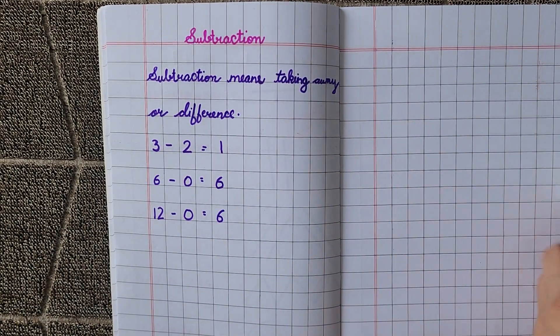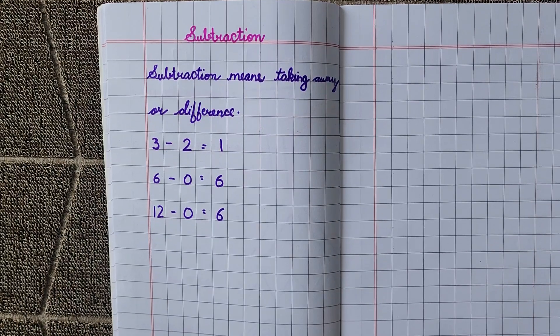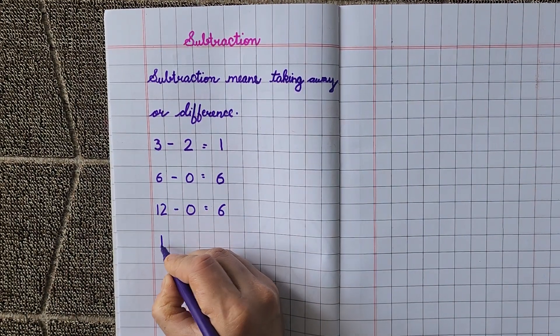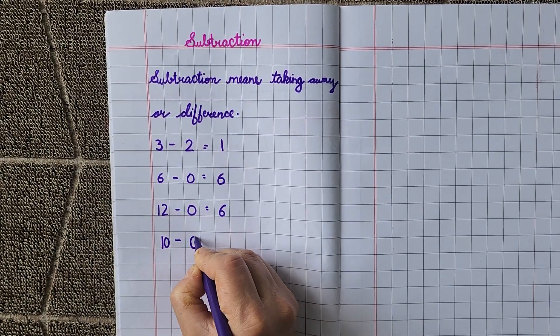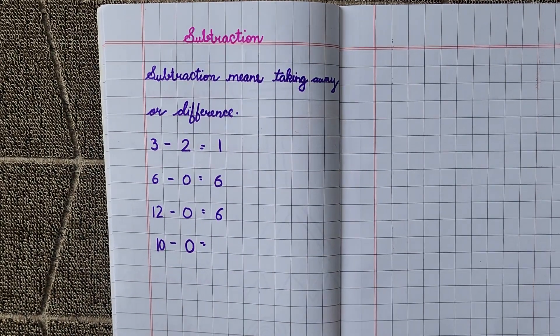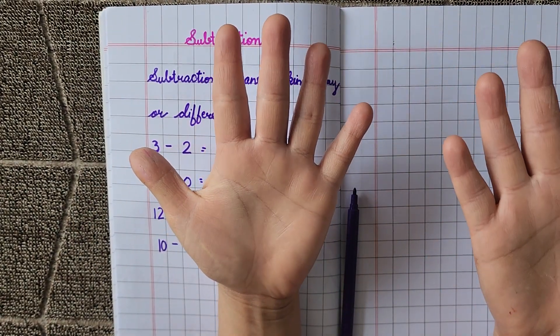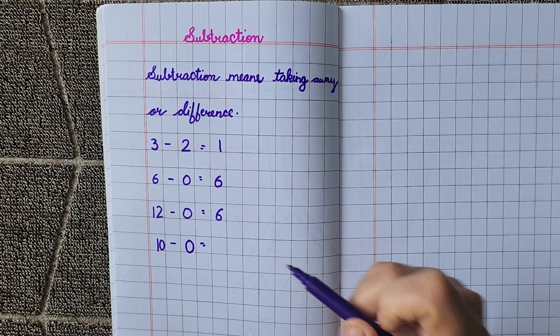Now similarly, 10 minus 0 is equal to 10. These are the 10 fingers. 10 meinse humne 0 minus kiya. So 10.